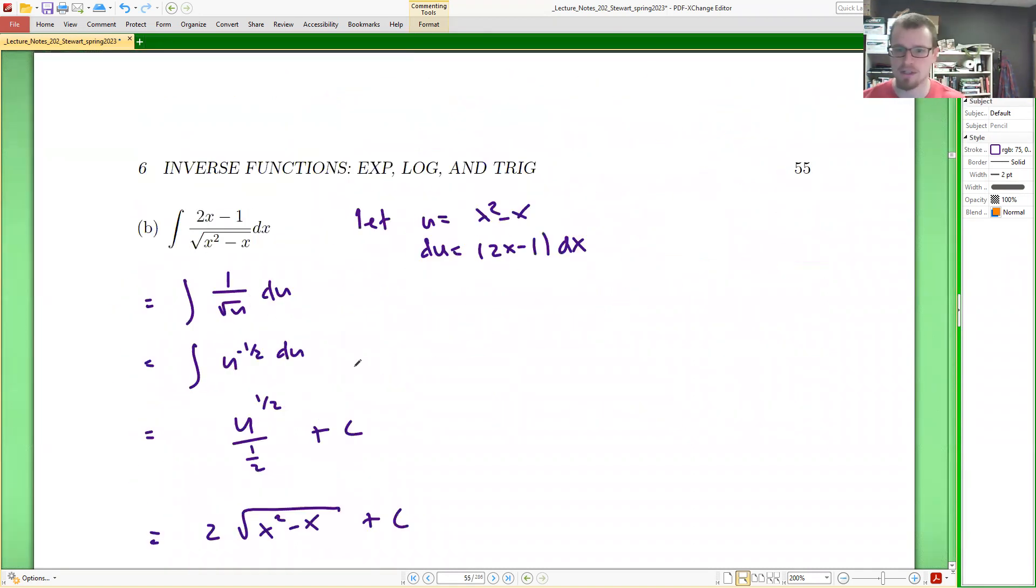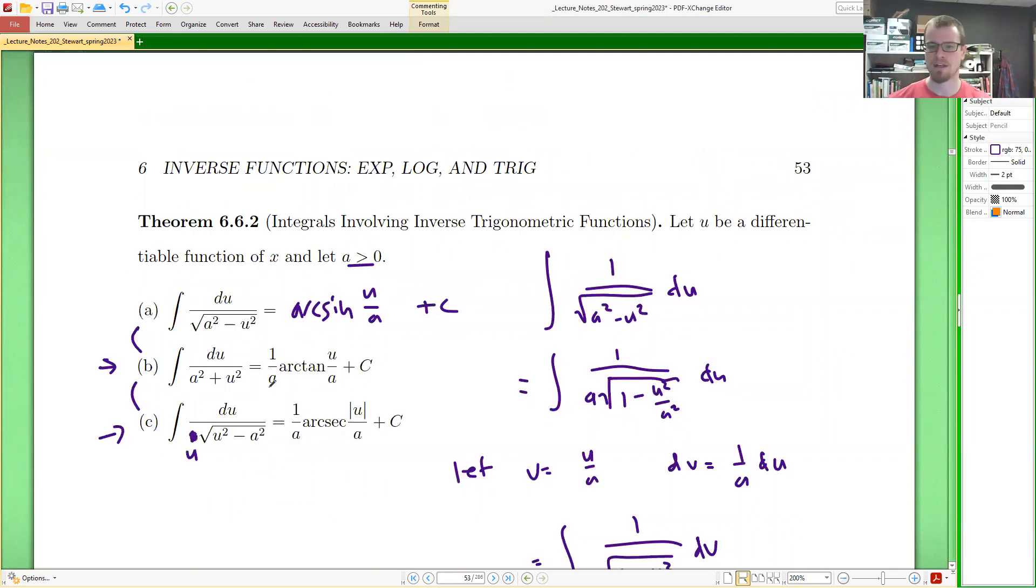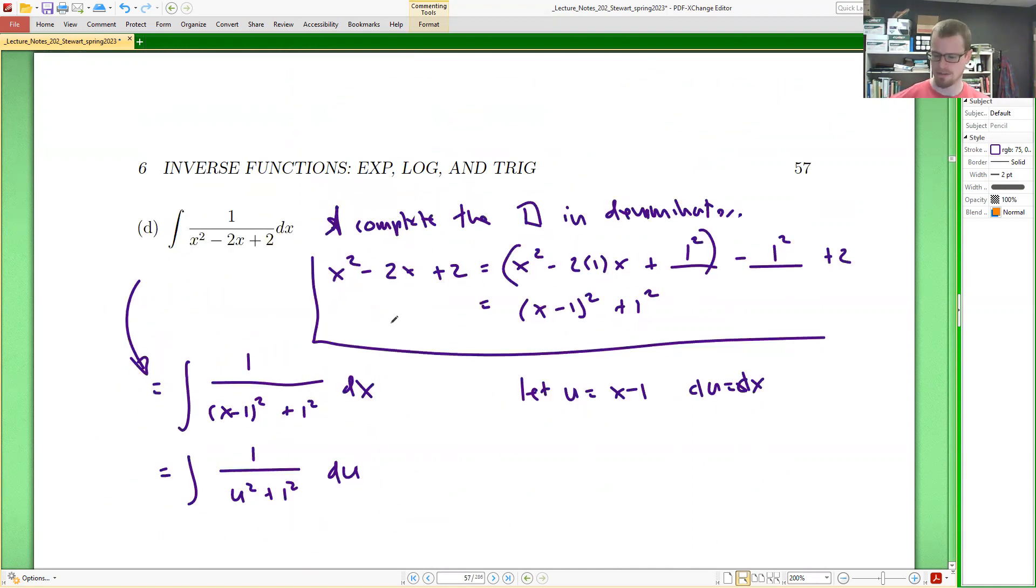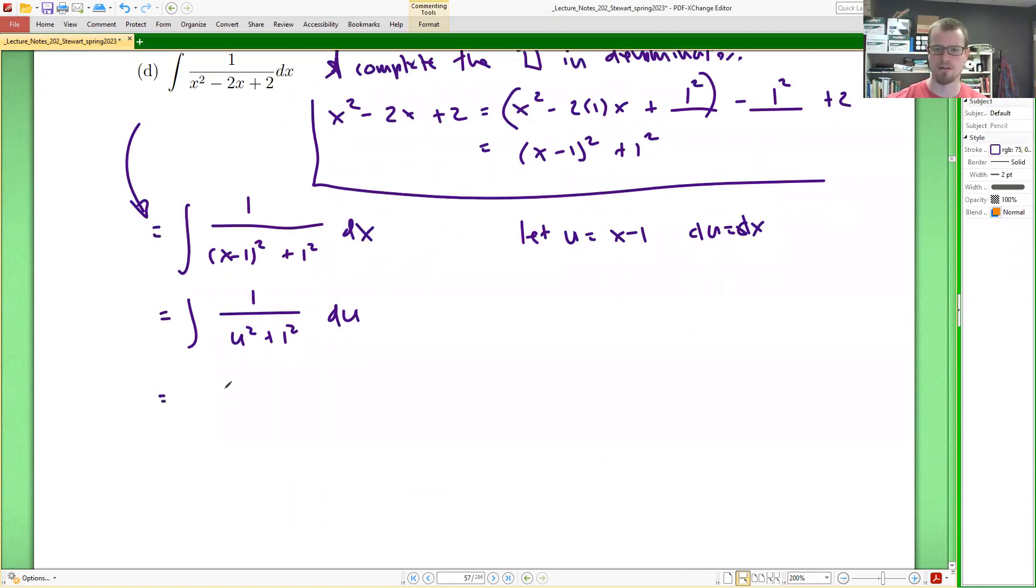And according to the formula that we're given, that's going to give us 1 over a, arctangent u over a. 1 over 1 is just 1, so this is the arctangent of u over 1 is just u, so arctangent of x minus 1. And that's it.